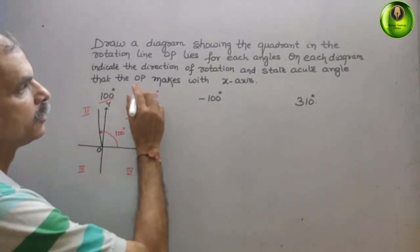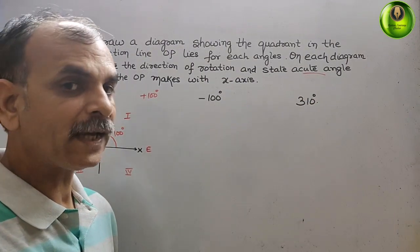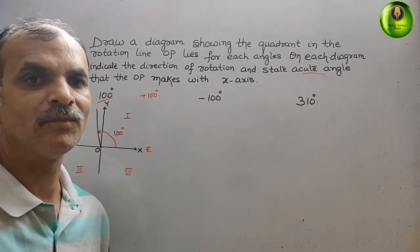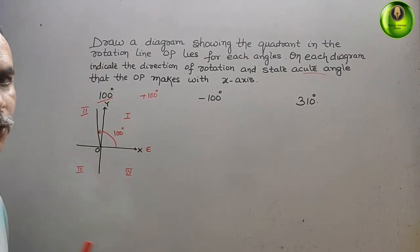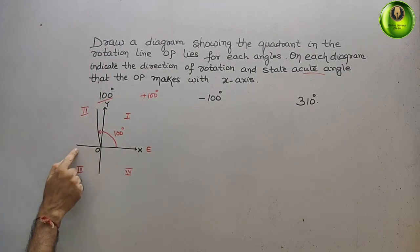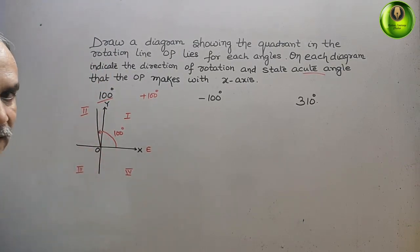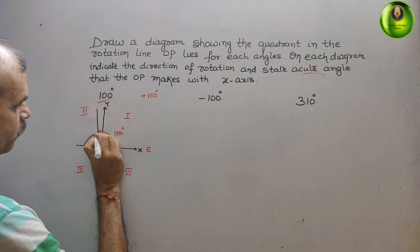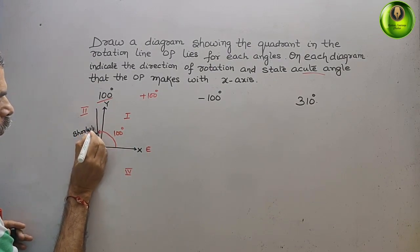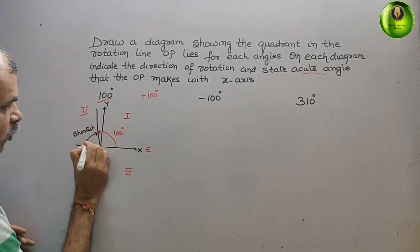Next, what they have told us: we have to state the acute angle — that means the angle from the X-axis, which is the base angle. The base angle is the shortest path from the X-axis to the line OP. The shortest path is from the negative X-axis to the line here. If this is 100 degrees and the total to the negative X-axis is 180 degrees, then what remains is 80 degrees.